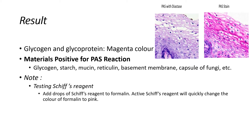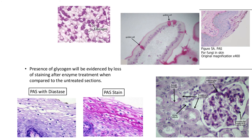The Schiff solution will quickly change the color of formalin to pink, confirming it is working. In PAS staining, both glycogen and neutral mucin give a positive reaction, showing magenta color. To differentiate glycogen from neutral mucin, treat with diastase — glycogen is sensitive so the color is decolorized, but neutral mucin is resistant to this enzyme, so the magenta color is retained after treatment.